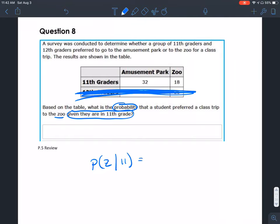So to figure this out, we take the number of people that prefer the zoo and divide it by the number of 11th graders. People that want to go to the zoo is 18. Number of 11th graders is 32 plus 18. That's 18 out of 50.